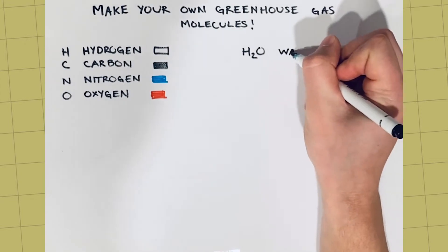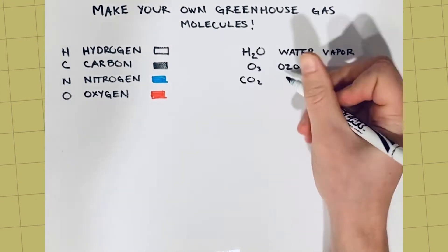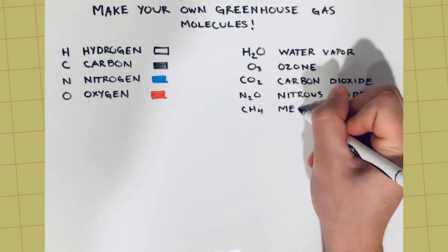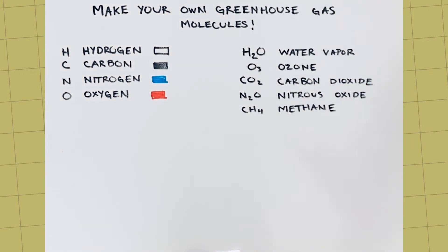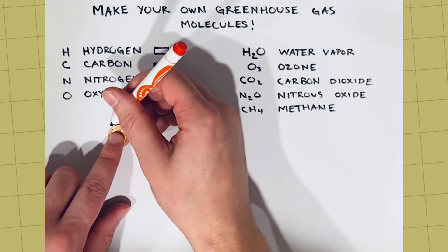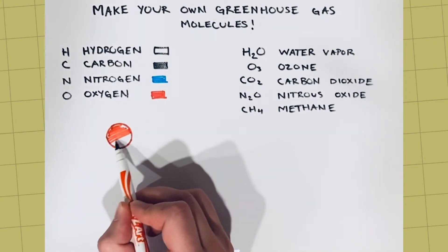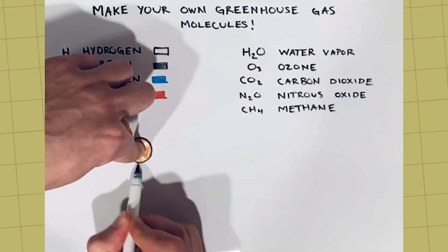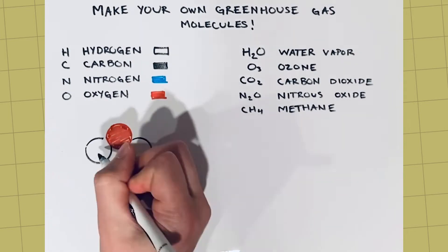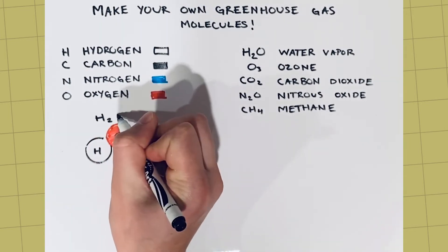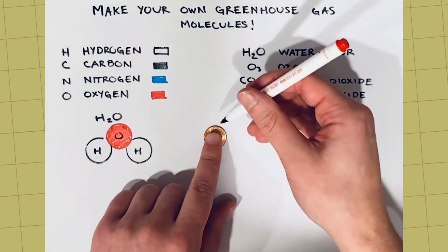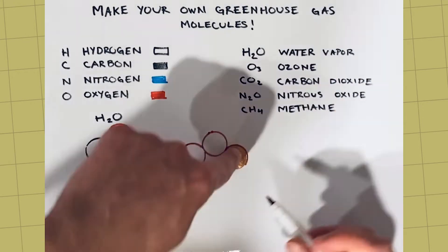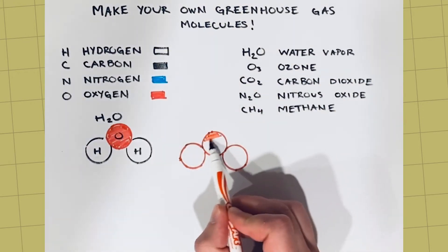The five natural greenhouse gases are water vapor, ozone, carbon dioxide, nitrous oxide, and methane. Then write each greenhouse gas's chemical formula. This formula is like a recipe, telling you what atoms or ingredients the molecule is made of. For example, a water vapor molecule has two hydrogen atoms and one oxygen atom. Therefore, the chemical formula for water vapor is H2O.